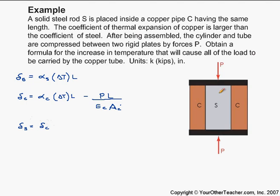Okay, right, they're stuck together, basically. So we have alpha S delta T L is equal to alpha C delta T L